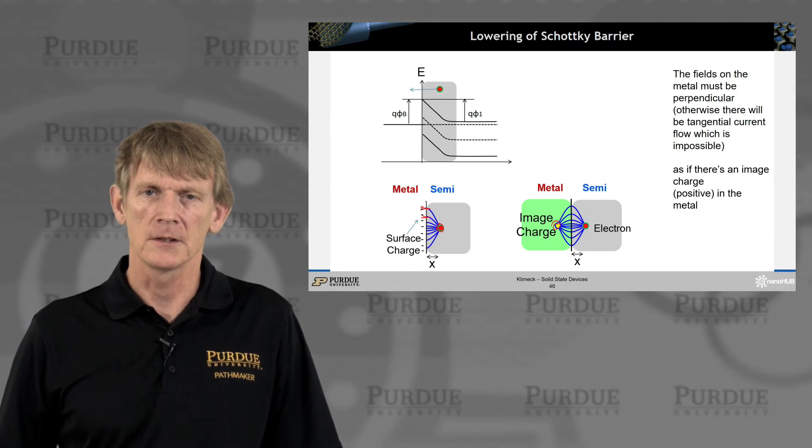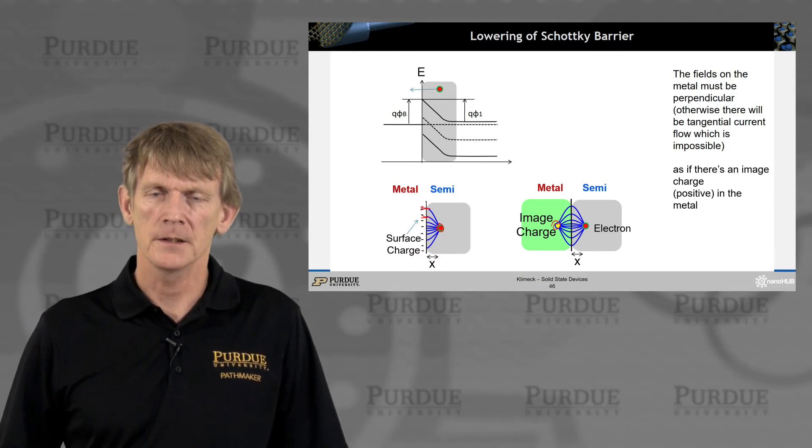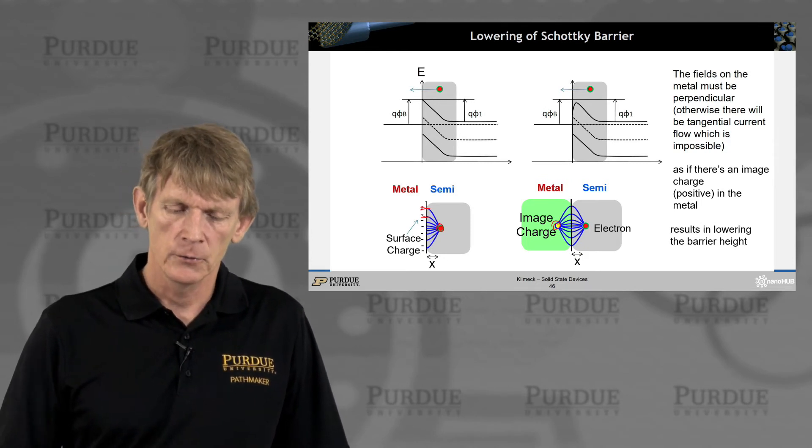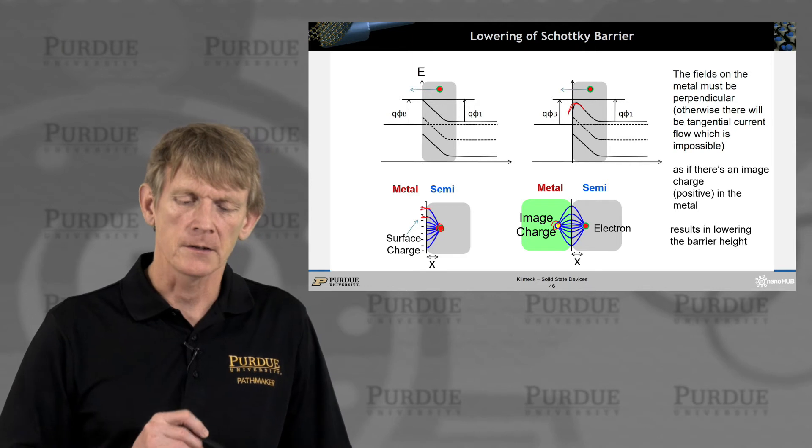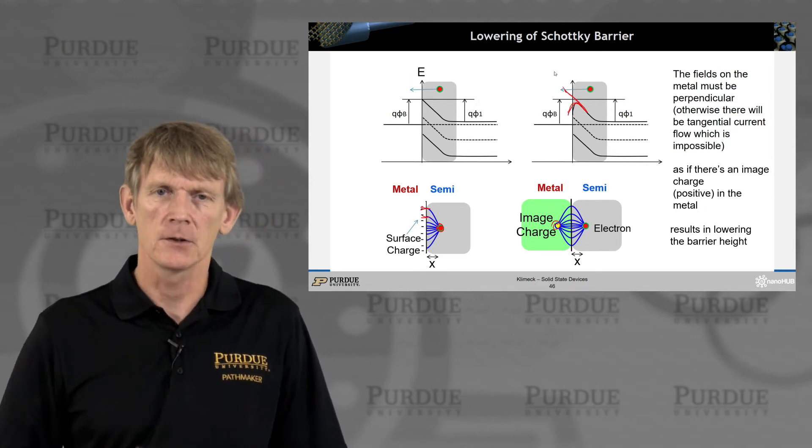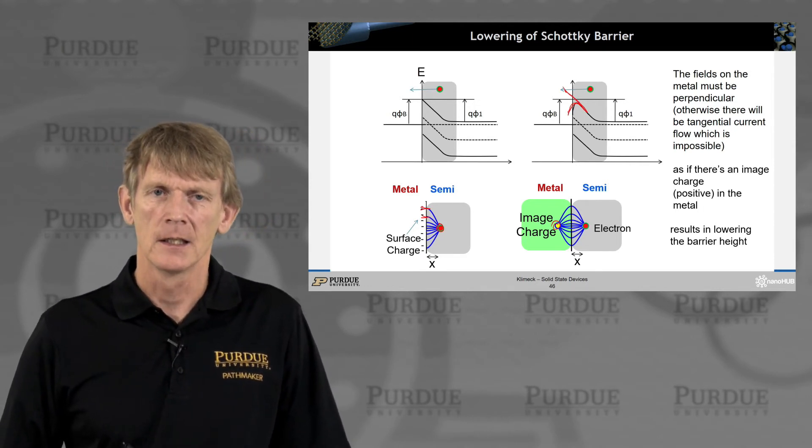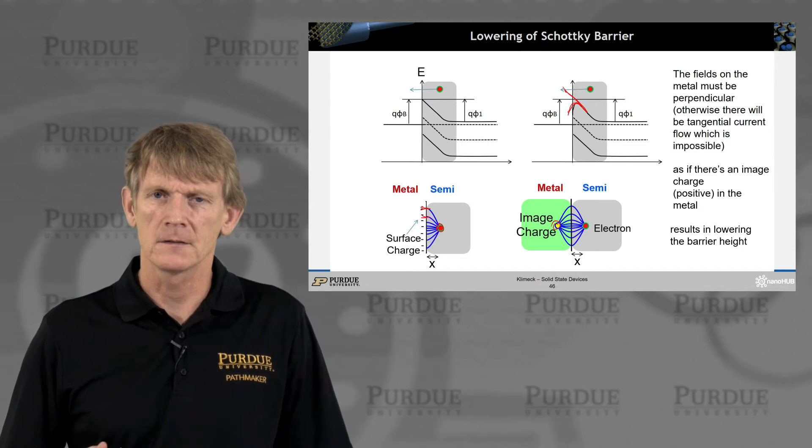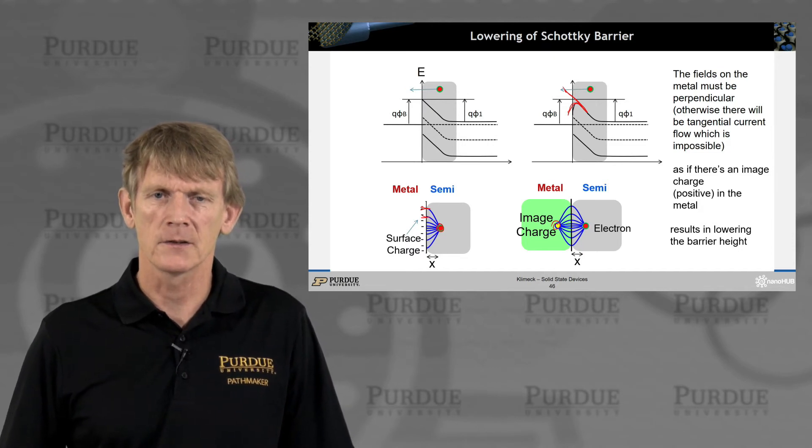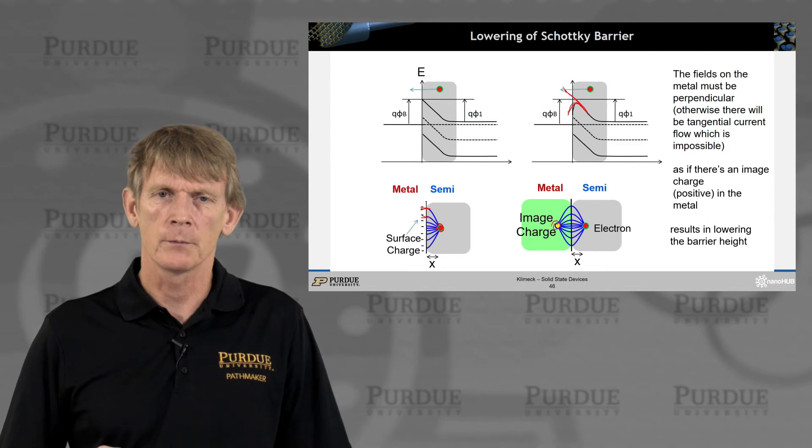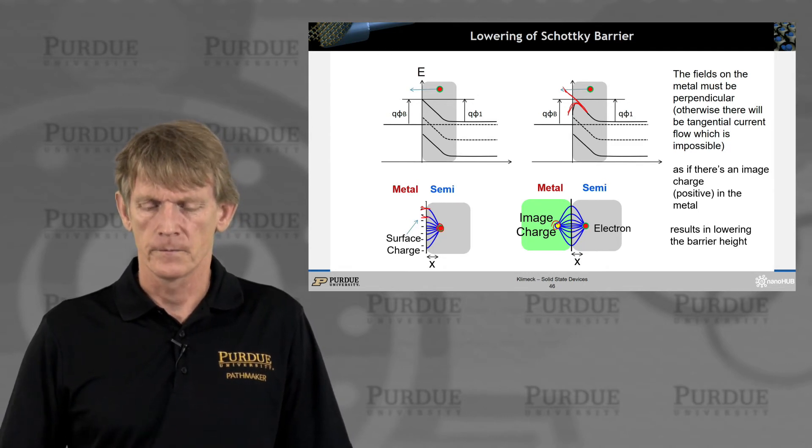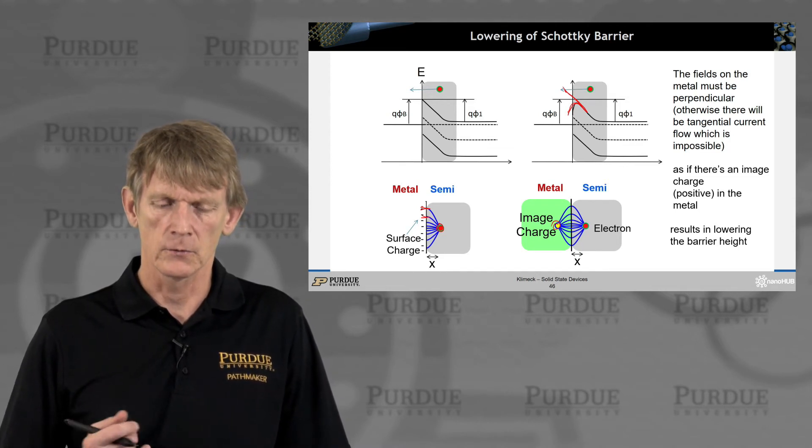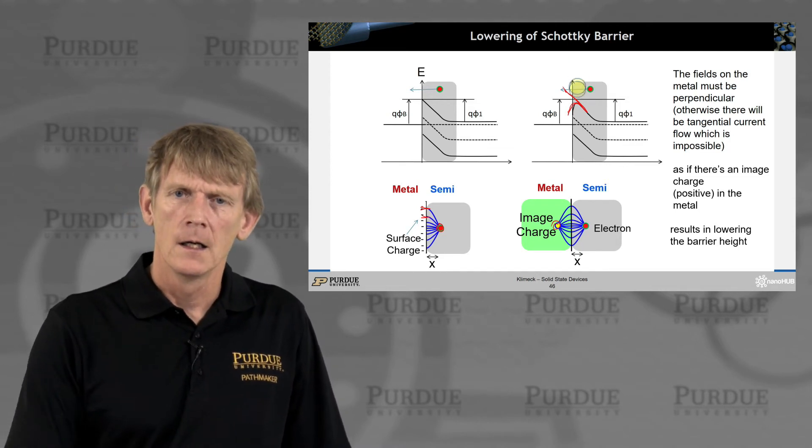So you add an equal and opposite charge into the metal. Now, if that's true, then this would result in barrier lowering. So your barrier is not quite as high as you originally had anticipated. And that can be an effect that is relevant in particular devices. For the resonant tunneling diodes we calculated a long time ago, this was relevant and it was a perturbation to the final result. Now you know this effect exists, and so you've heard of it.